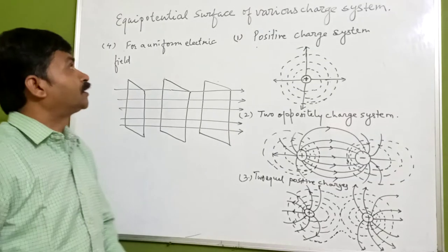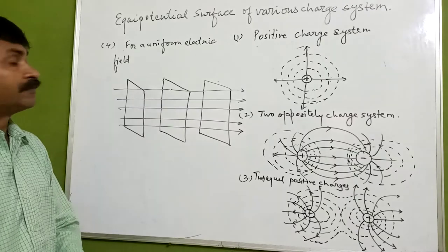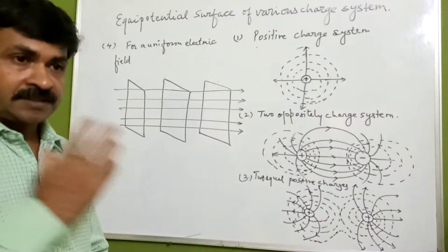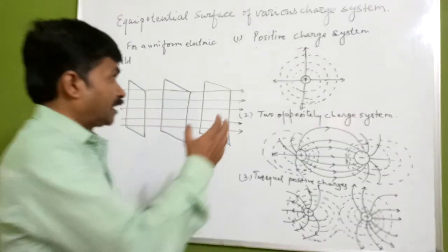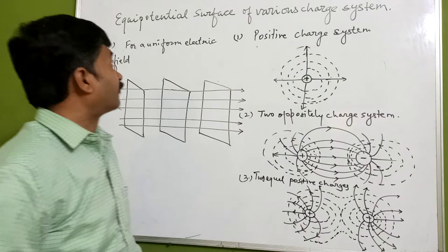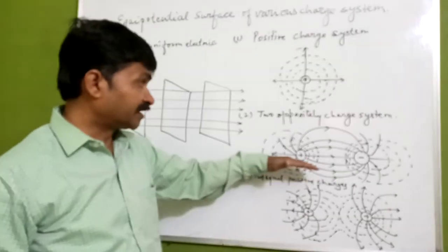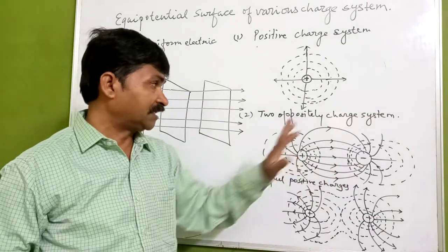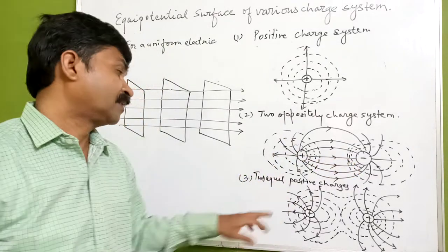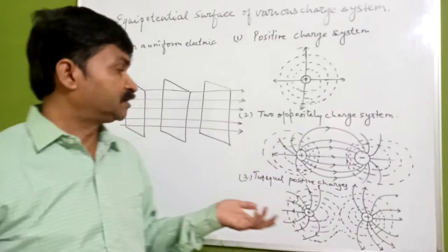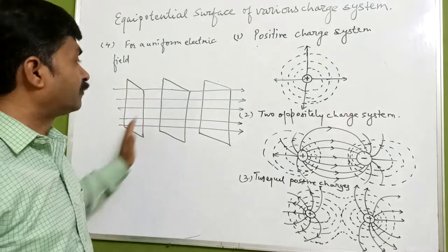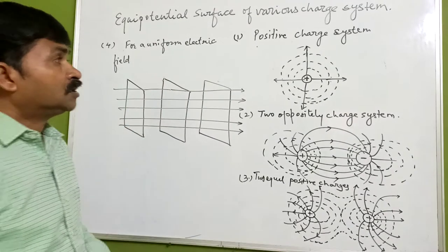Students, here we are going to study equipotential surfaces for various charge systems. What is a various charge system? If we have only a positive charge system, what will happen with the equipotential surface? Second, if we have two oppositely charged systems — one positive and one negative — what will happen? Then two equal positive charges, and finally a uniform electric field.